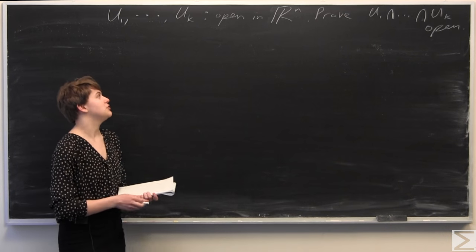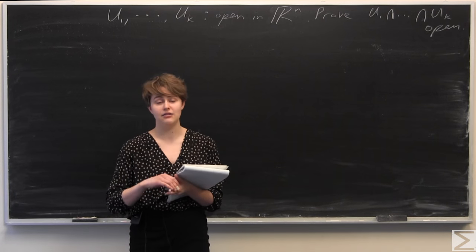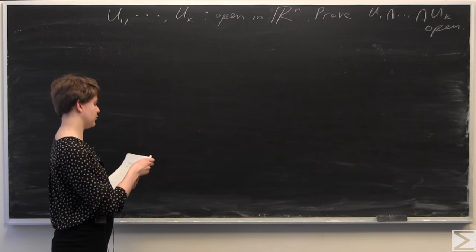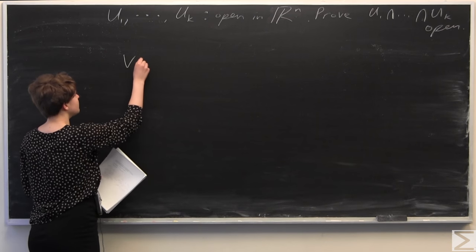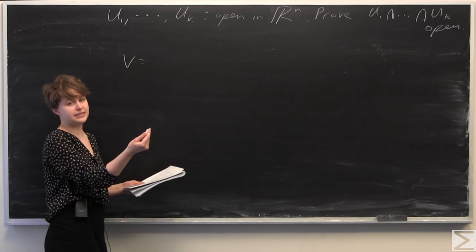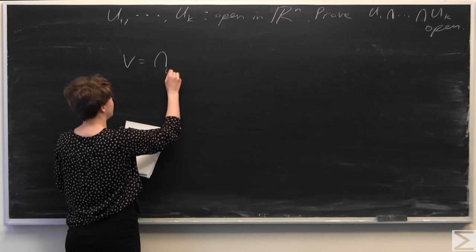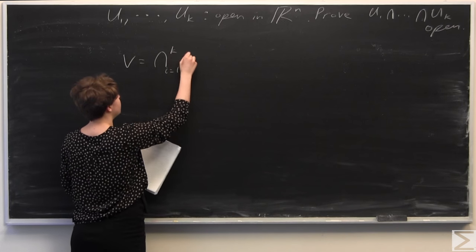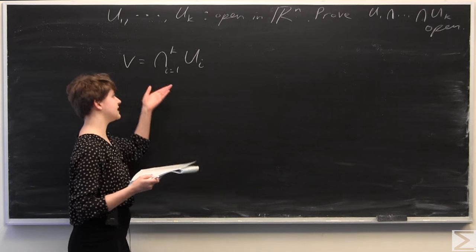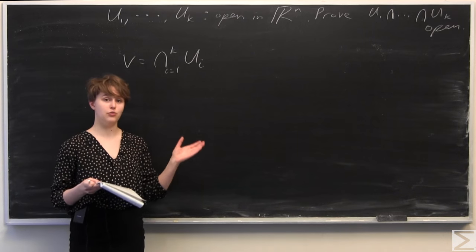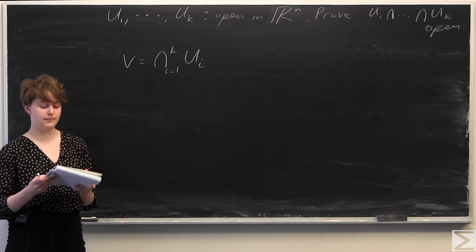The way we're going to approach this is we're going to use the definition of an open set, as one normally does in a proof like this. First, we're going to let V be some set where V is equal to the finite intersection from i equals 1 to k of ui. So we're letting V be the set which is the intersection of all these open sets, and we're trying to prove that V is open.